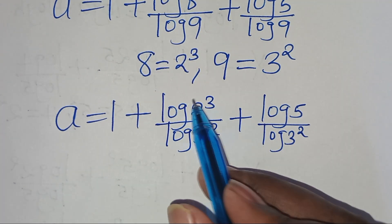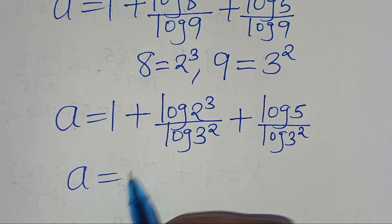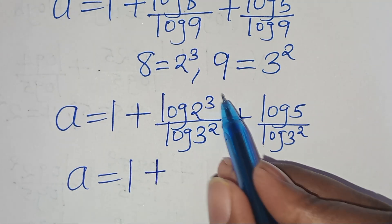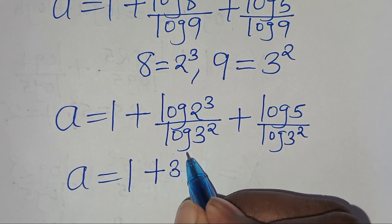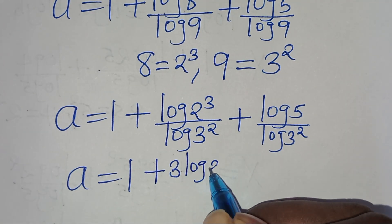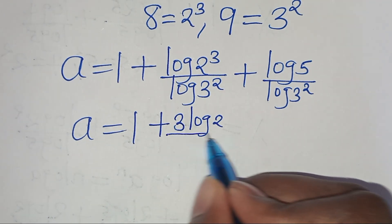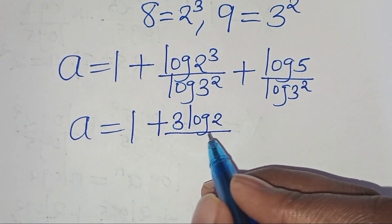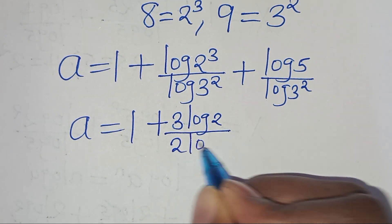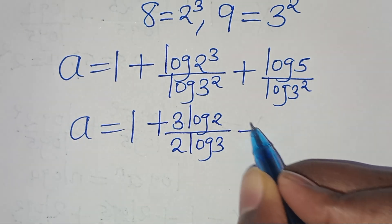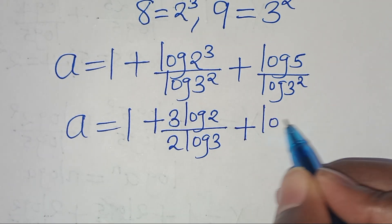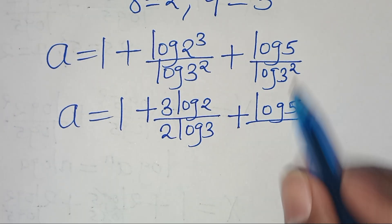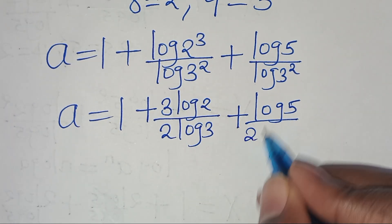Applying the power rule, so that we have a is equal to 1, plus log(2 to the power of 3) becomes 3·log 2, divided by log(3 to the power of 2) which becomes 2·log 3, then plus log 5 divided by log(3 to the power of 2) which becomes 2·log 3.